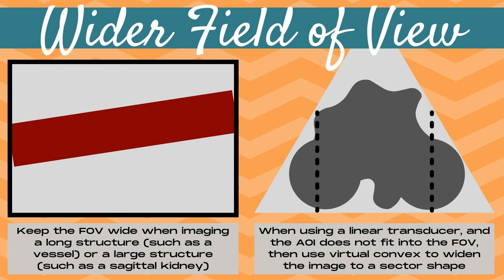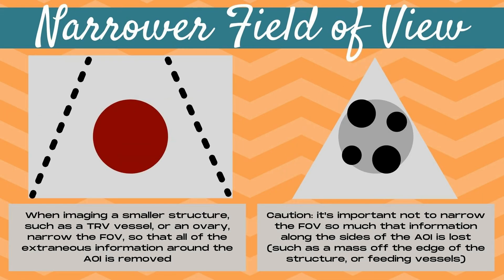However, if the mass is extensive in size, this may not be possible. When should you narrow the field of view? When imaging a smaller structure such as a transverse blood vessel or an ovary, narrow the field of view so that all extraneous information around the area of interest is removed. It's important not to narrow the field of view so much that information along the sides of the area of interest is lost, such as a mass hanging off the edge of a structure or feeding vessels going into a mass or structure.